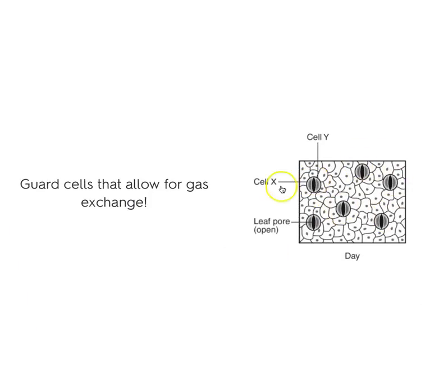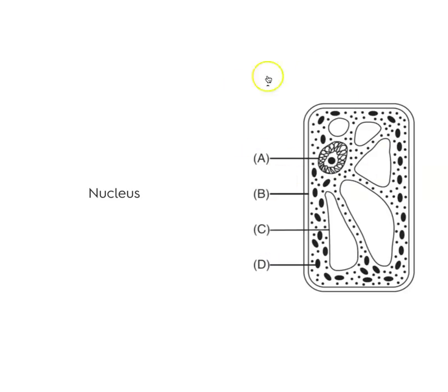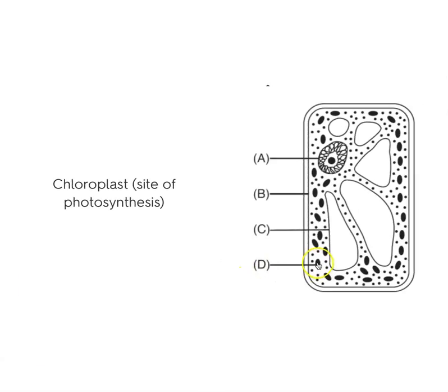What is this a picture of? These are guard cells on a plant. They allow for gas exchange and help with homeostasis within the plant for photosynthesis. They control the level of water, gas, and carbon dioxide levels. Label A: this is a plant cell — A is the nucleus.